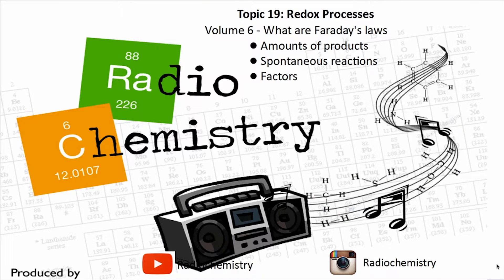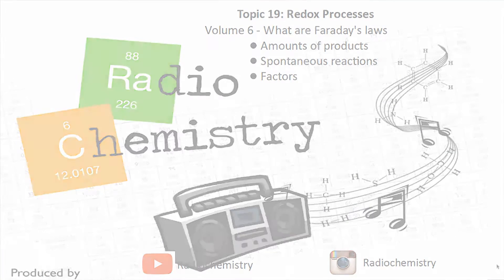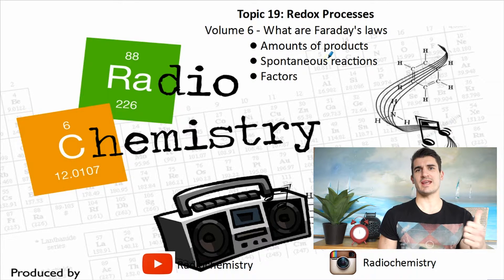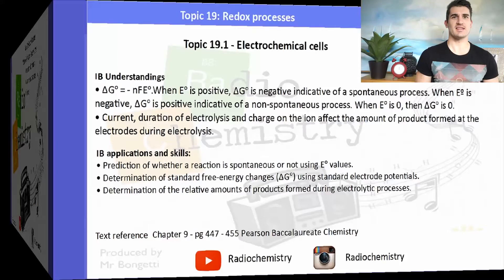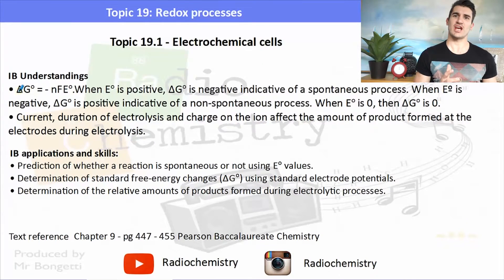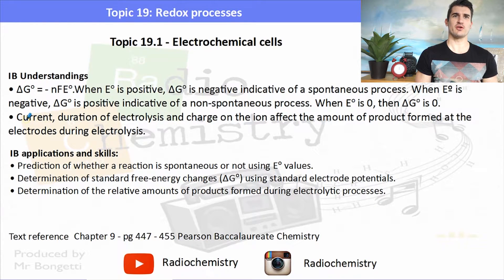Welcome to another video. This is Topic 19, Higher Level Redox, Volume 6: What are Faraday's laws? In Volume 6 we look at how we can calculate the amounts of products, how to determine if something is spontaneous, and then we look at some factors that change the amount of products produced. The IB understandings and applications focus on Gibbs free energy from Topic 5, and whether something is spontaneous based on its ΔG and E°.